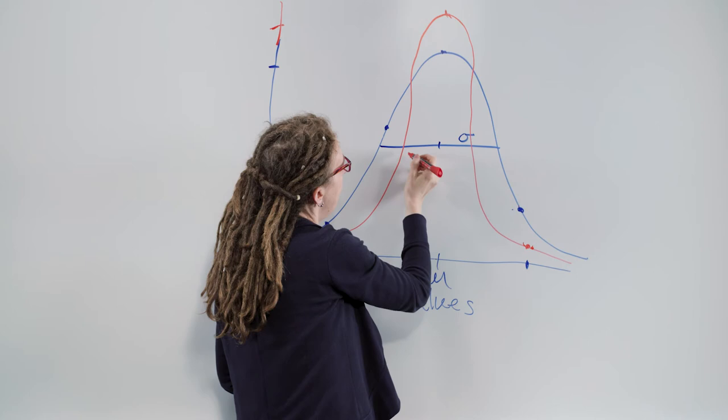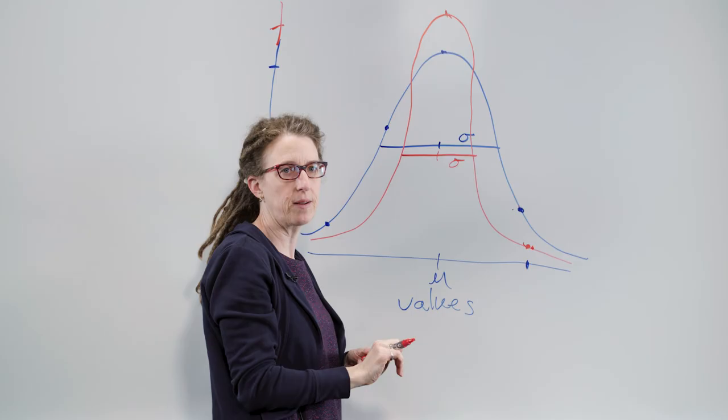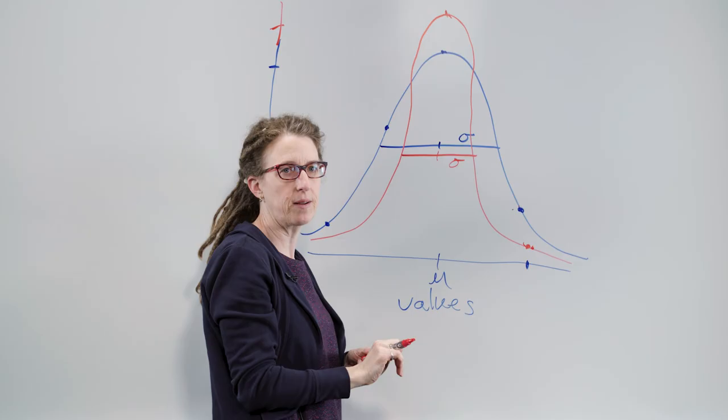And so this distribution being narrower is going to have a smaller variance or a smaller standard deviation. It has less noise than the blue distribution. That's what we mean when we talk about variation in your data.